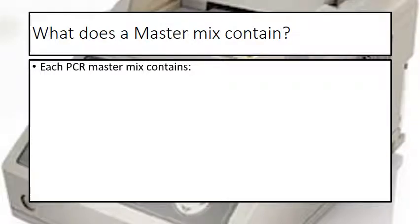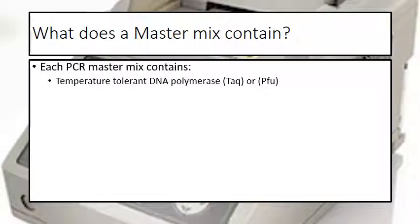Each PCR master mix is going to contain several key components. They may be called different things depending on the company you order from, but it's essentially the same stuff — and you can even make your own PCR master mix. First, it needs some sort of temperature-tolerant DNA polymerase — something that will withstand high temperatures around 100 degrees Celsius at boiling point. These DNA polymerases are usually isolated from bacteria found inside hot springs or hydrothermal vents.